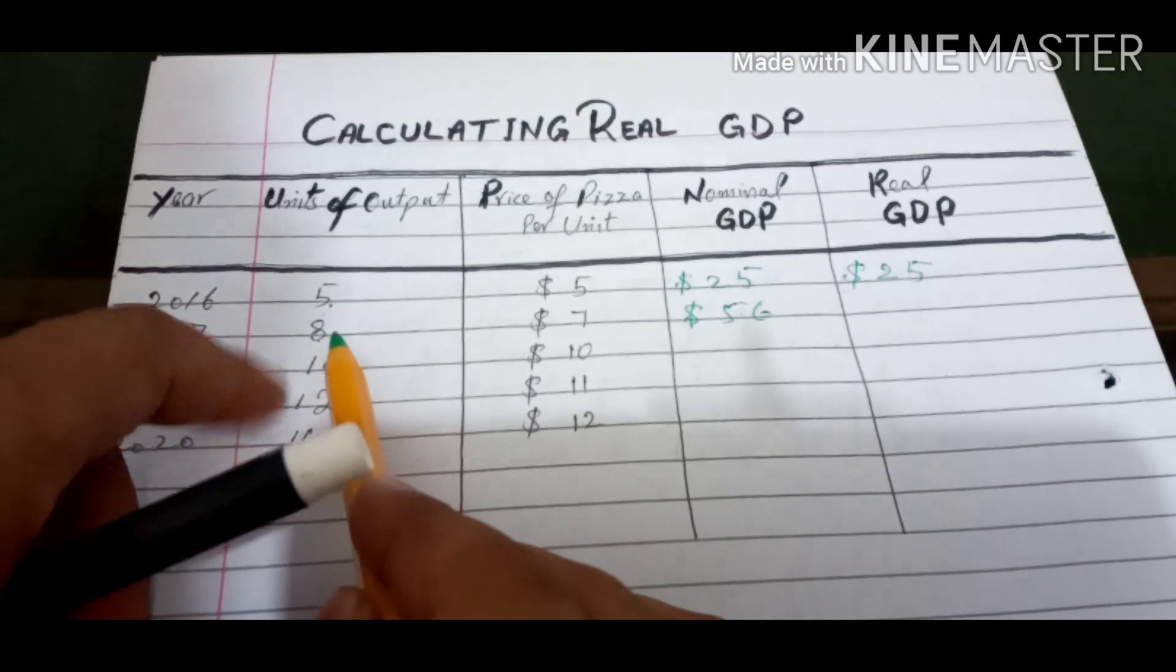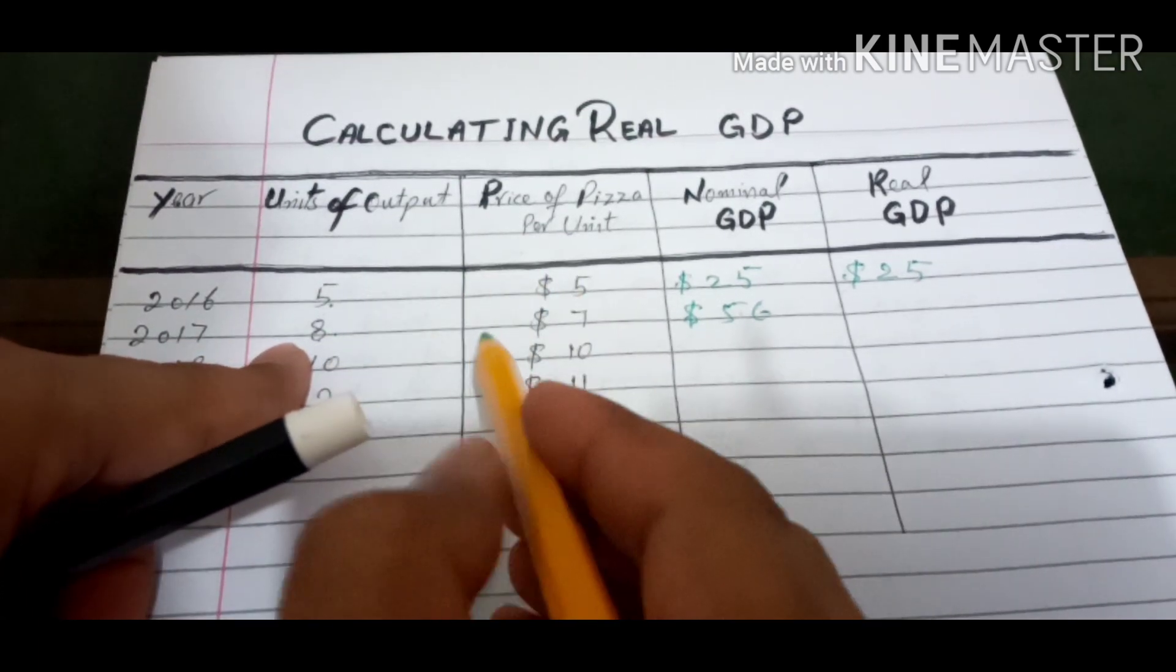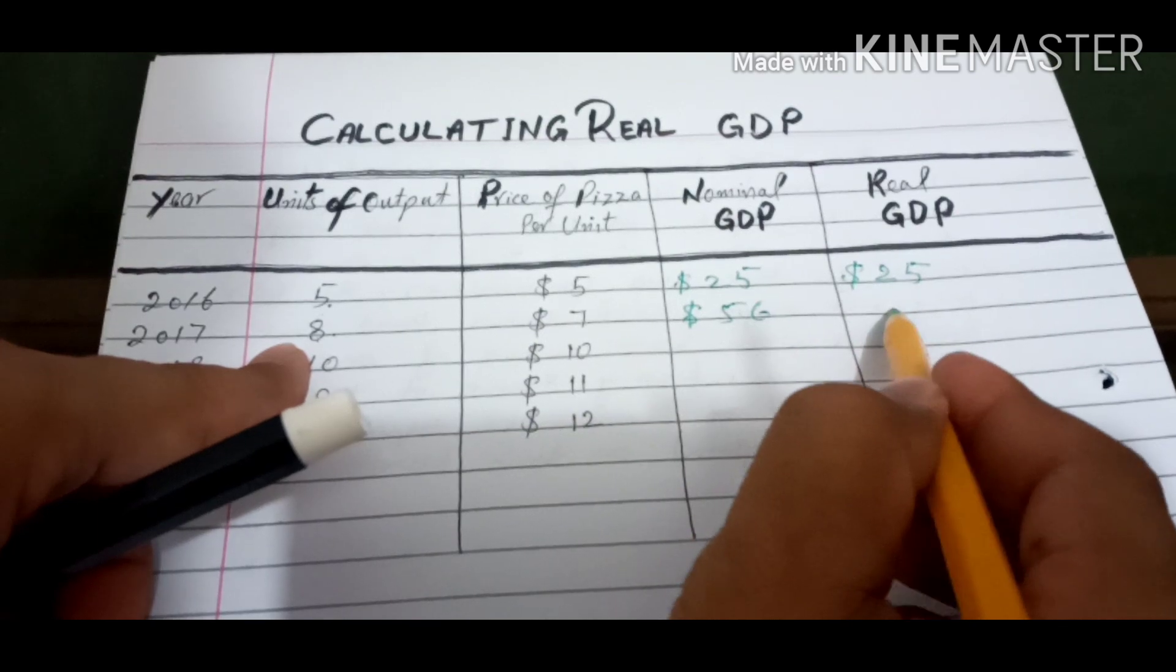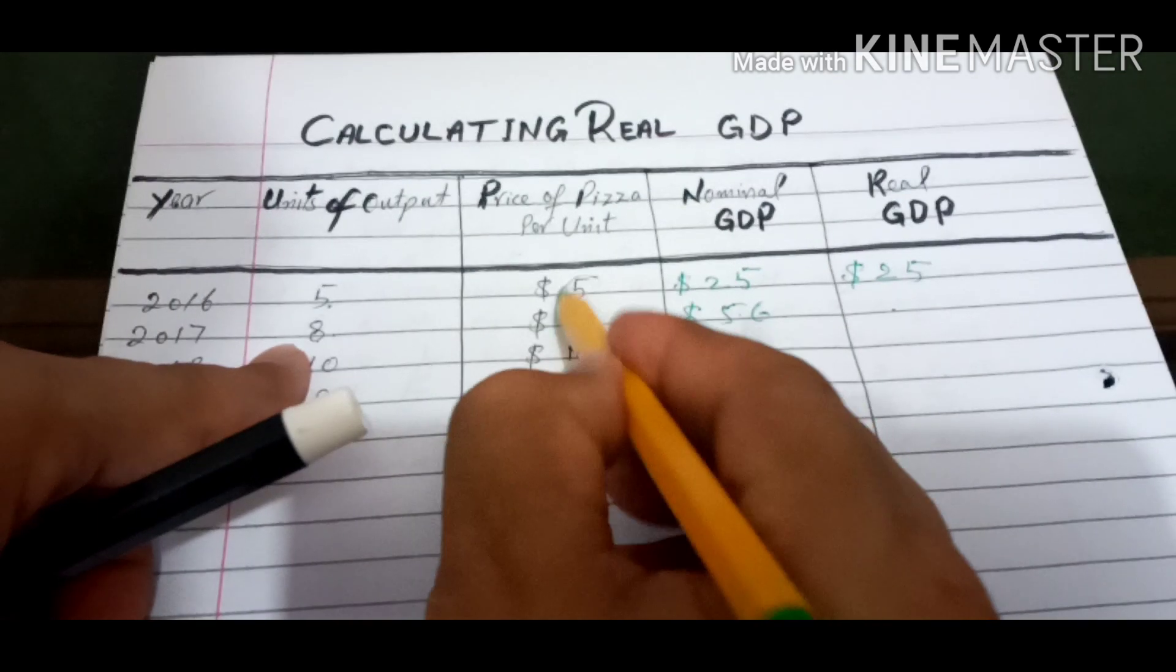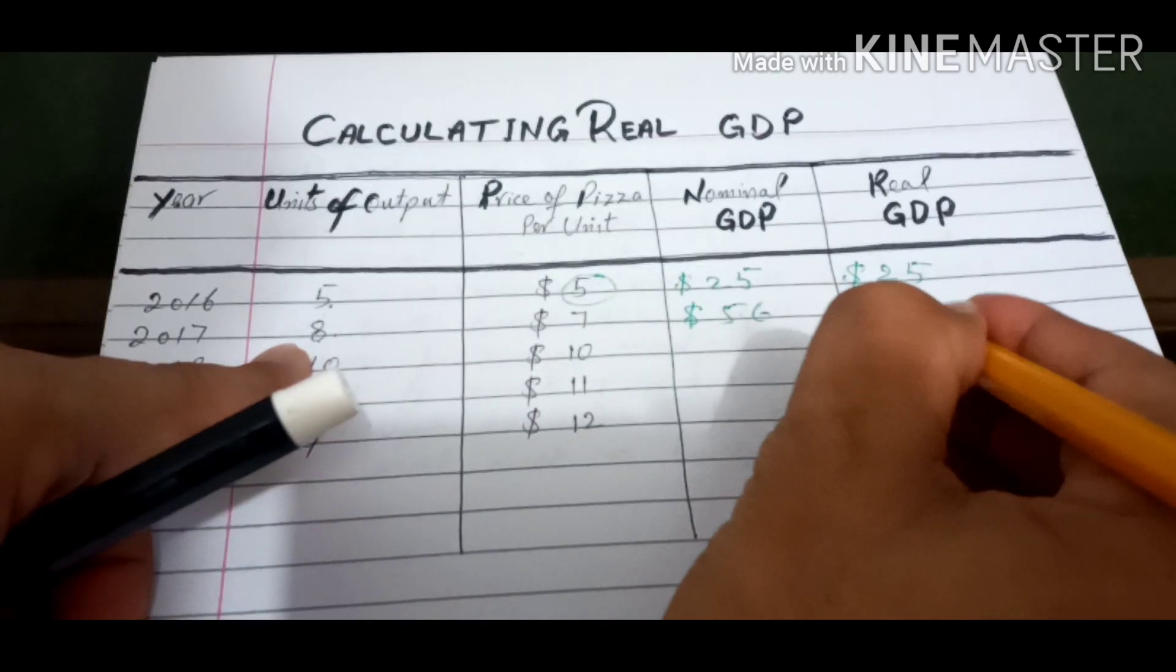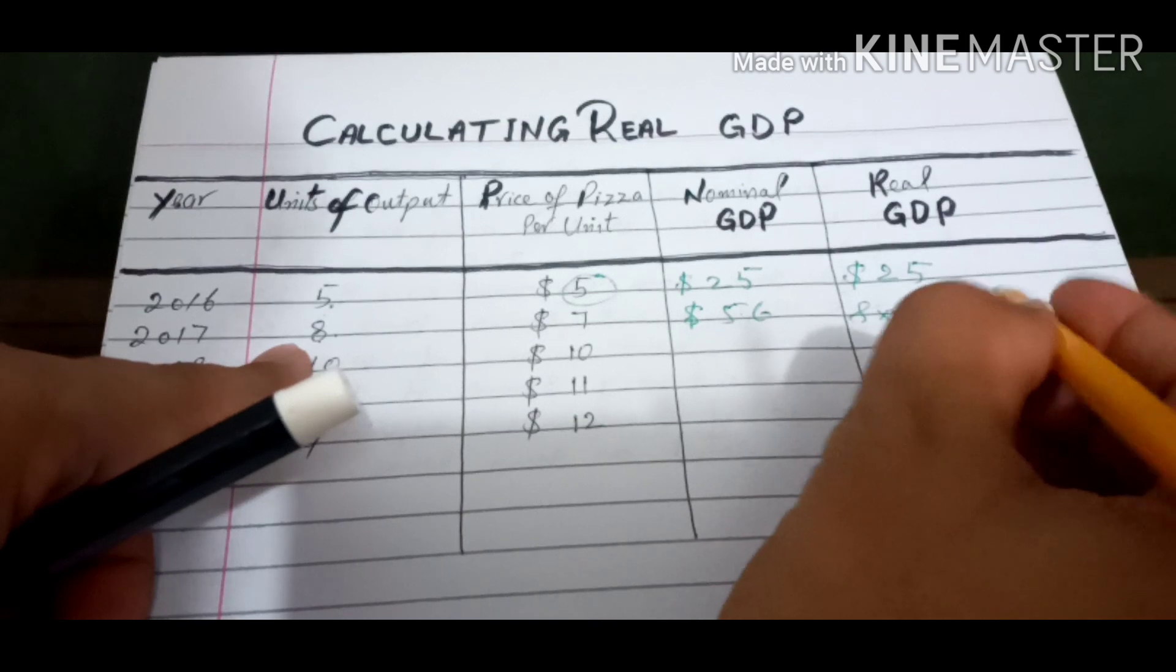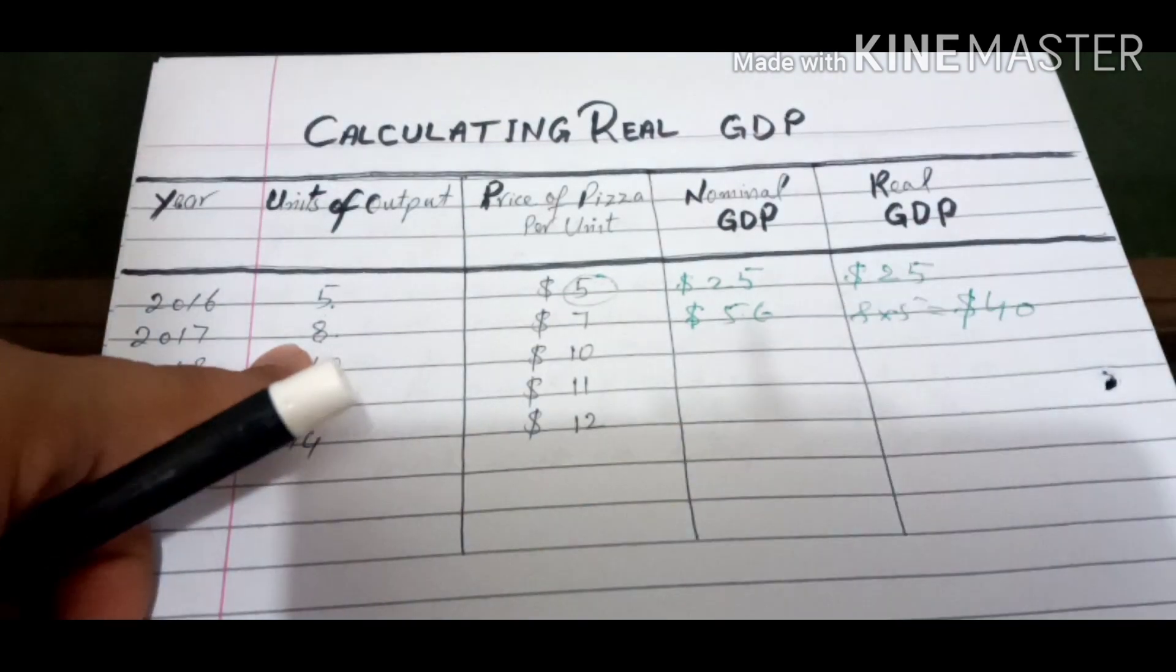We have to multiply the number of units with the base year price. We have to multiply the number of units with the base year price. 8 multiplied by 5, it will be $40. So this is real GDP which we have to calculate.